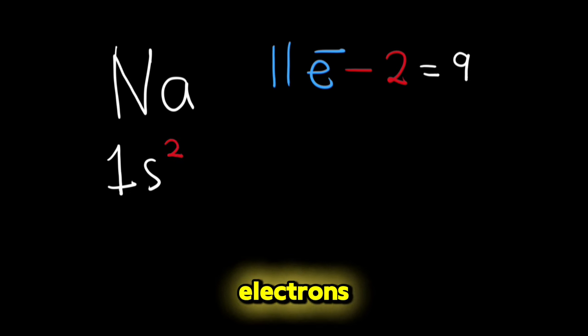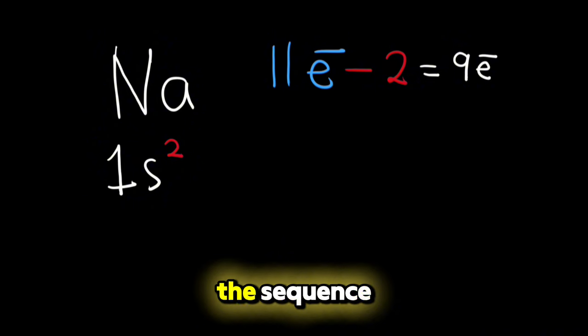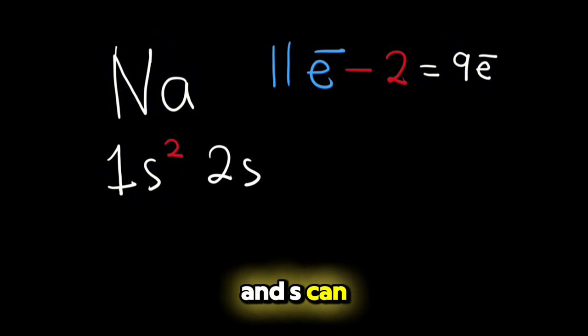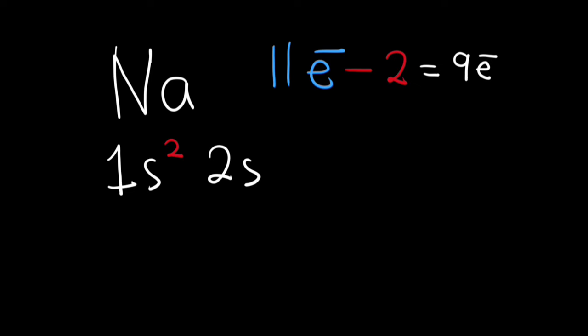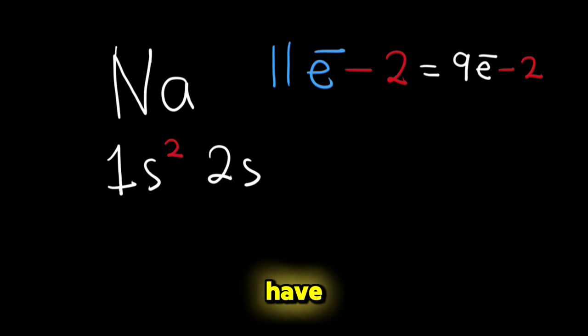Now according to the sequence, the next one is 2s, and s can only store two electrons, so we will subtract two electrons from the electrons that we have. It means that we will write here 2, and we will be left with seven electrons.